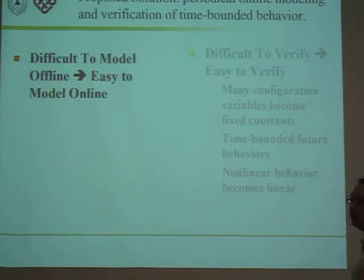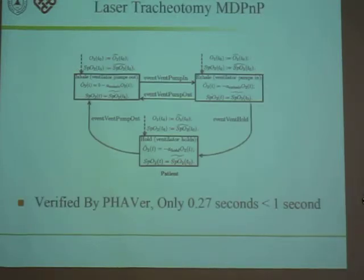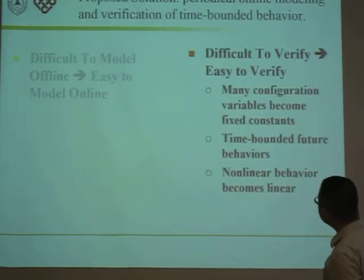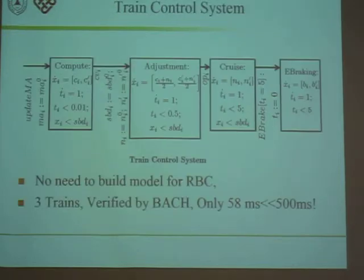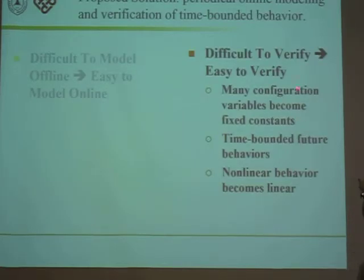We find that the two challenges are being dealt with. The first one — the difficulty of modeling offline state variables — now becomes easy to model online. For example, if we carry out periodical modeling and verification of a patient with a period of one second, then we only need to predict the blood oxygen level for the next one or two seconds, and this can be easily done with conventional linear regression. Also, due to online modeling, many previously hard-to-predict configuration variables now become fixed constants for the specific period that we are verifying. For example, if we verify the train control system periodically with a period of 500 ms, then we can safely use the reading of the train velocity at the beginning of the period as the velocity for the whole verification period. So this really reduces the verification state space.